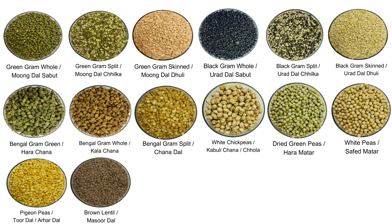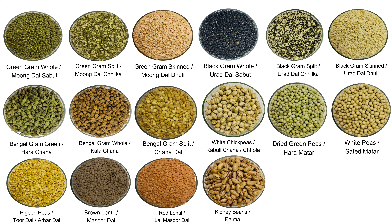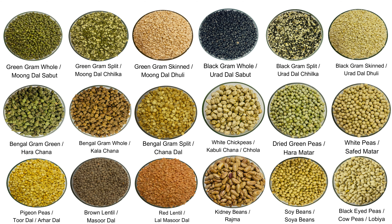Brown lentil, or masoor dal. Red lentil, or masoor dal. Kidney beans, or rajma. Soy beans, or soya beans. Black-eyed peas. Cow peas, or lobia.